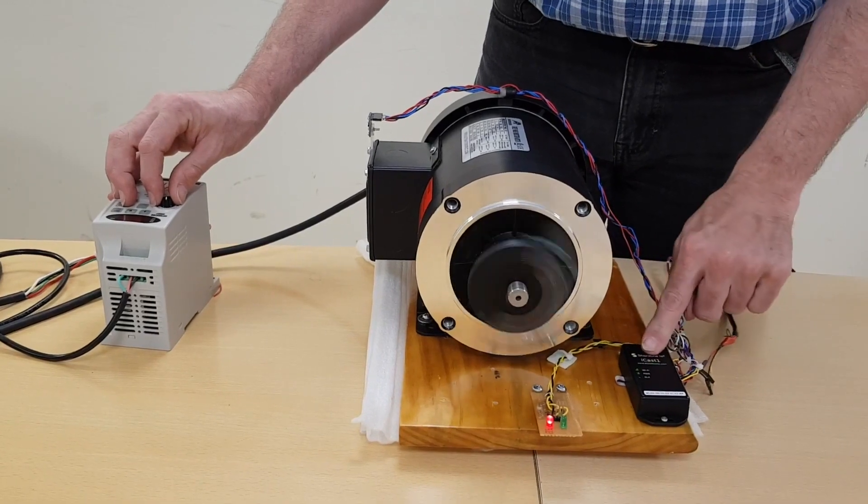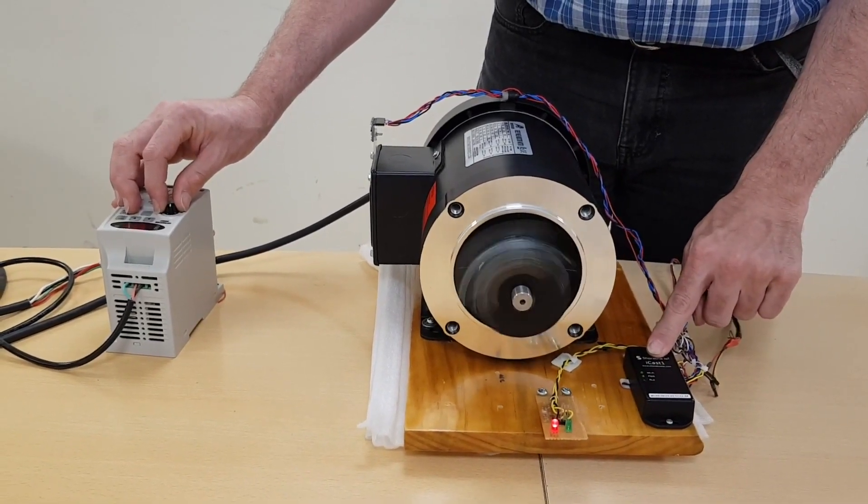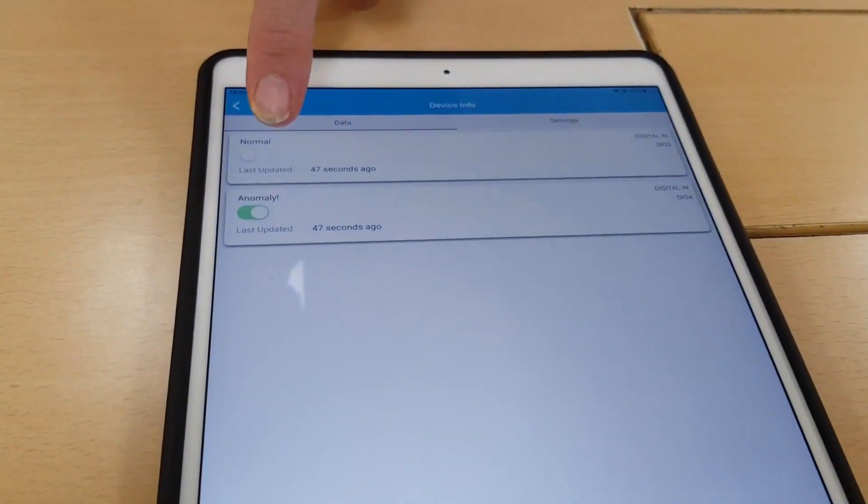The ICAST then takes that fault information and it will send it up to the cloud. Once the cloud receives it, it will update the dashboard, and you'll see that the anomaly is detected.